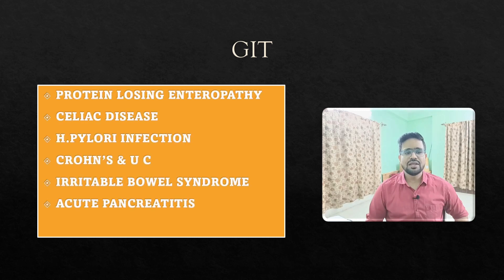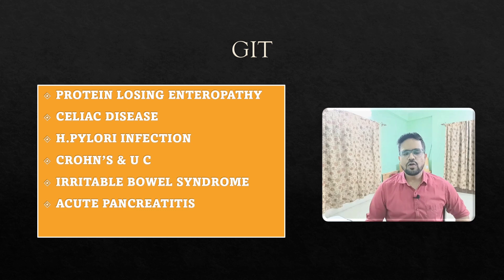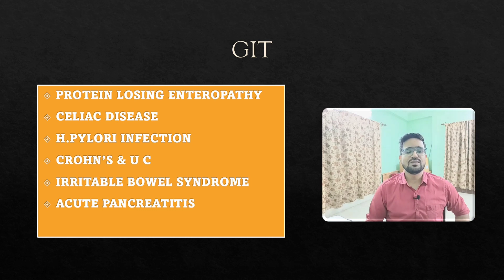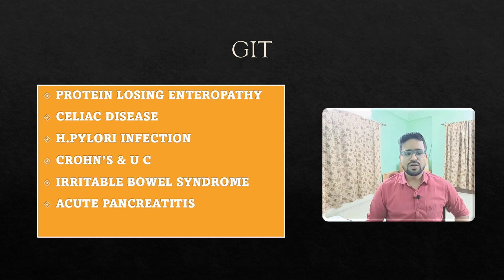For GIT, the key topics are: protein-losing enteropathy, celiac disease, H. pylori infection and its relationship to gastric carcinoma — asked repeatedly — Crohn's disease and ulcerative colitis, which have been asked three times, irritable bowel syndrome, and acute pancreatitis — in one paper, four to five questions came from acute pancreatitis alone. Overall in GIT, irritable bowel syndrome and acute pancreatitis are the most important topics to revise before the exam.